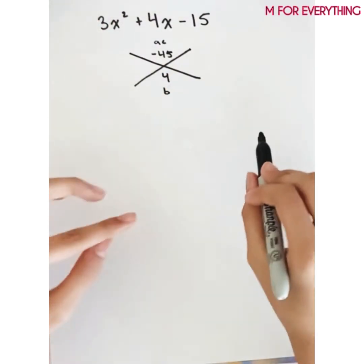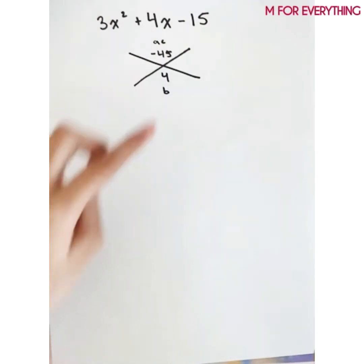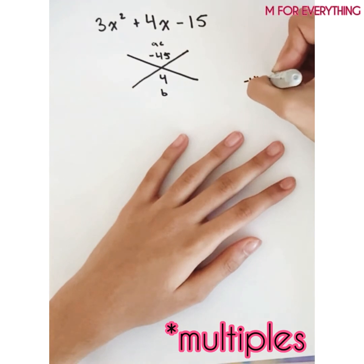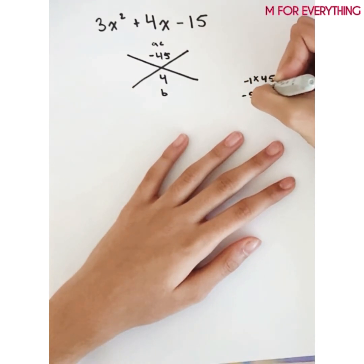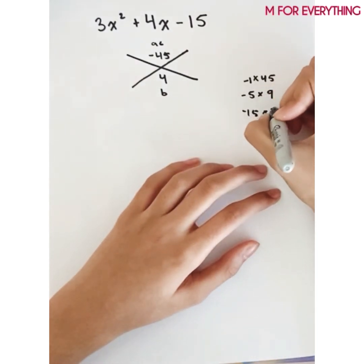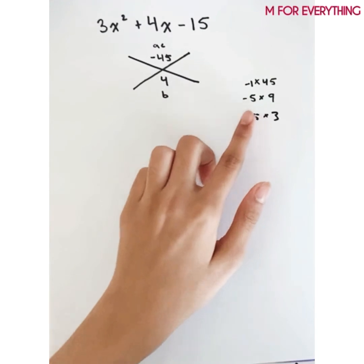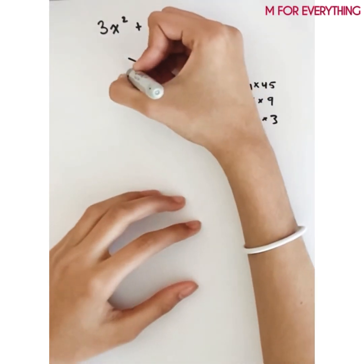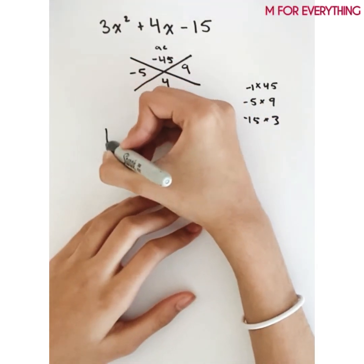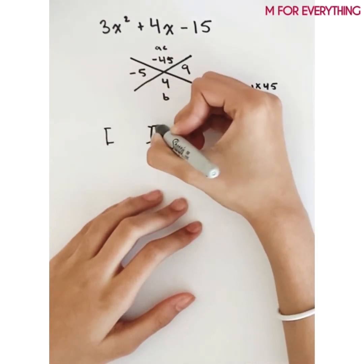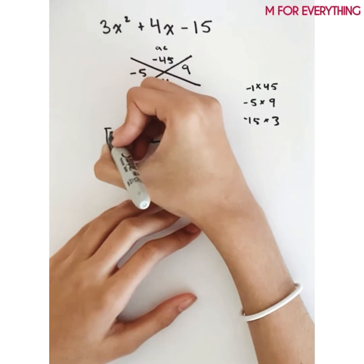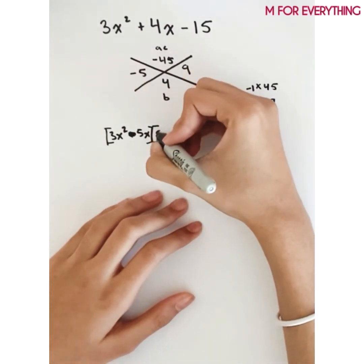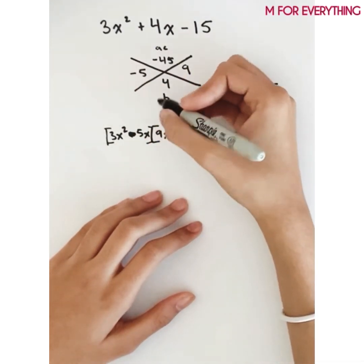We need something that multiplies to negative 45 and adds up to 4. Writing down the multiples: negative 5 times 9 works, because negative 5 plus 9 equals 4. So we split 4x into negative 5x and 9x, rewriting as 3x squared minus 5x plus 9x minus 15.